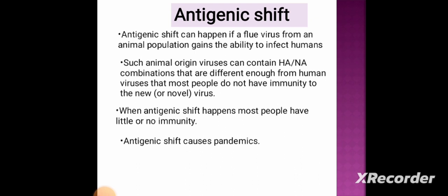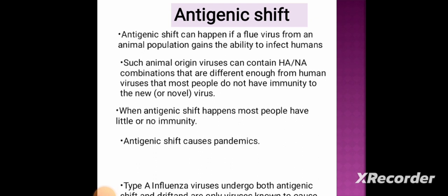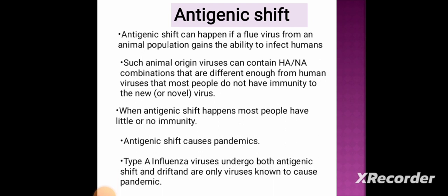Antigenic shift causes a pandemic — a pandemic being when a disease is spreading from country to country, continent to continent. Type A influenza viruses undergo both antigenic shift and antigenic drift and are the only viruses known to cause pandemics.